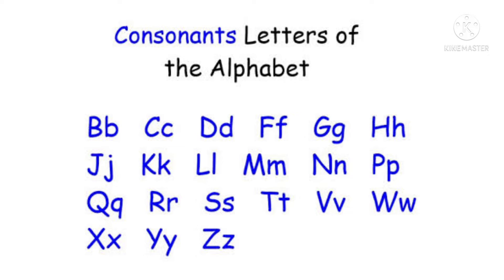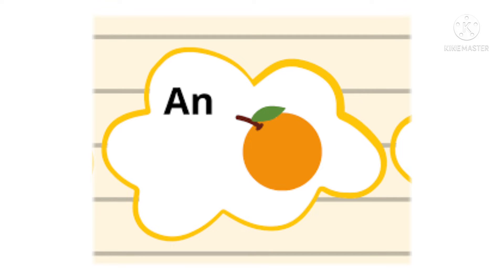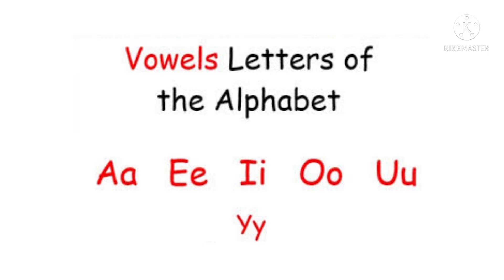The letter 'a' is used for consonants — that is B, C, D, F, G, H, J, K, L, M, N, P, Q, R, S, T, V, W, X, Y, and Z. The word 'an' is used before vowels — that is A, E, I, O, U, and also Y.